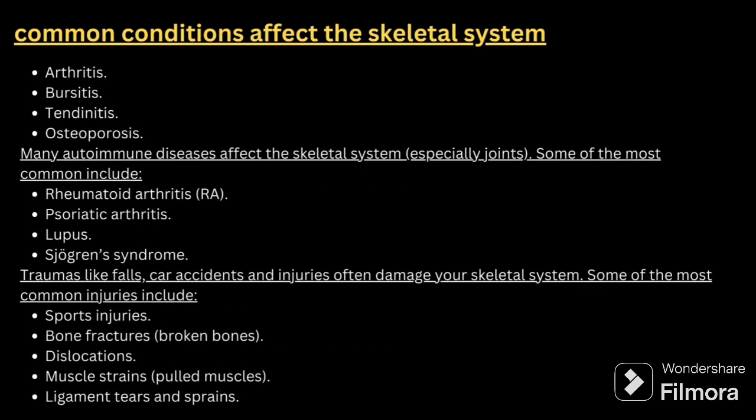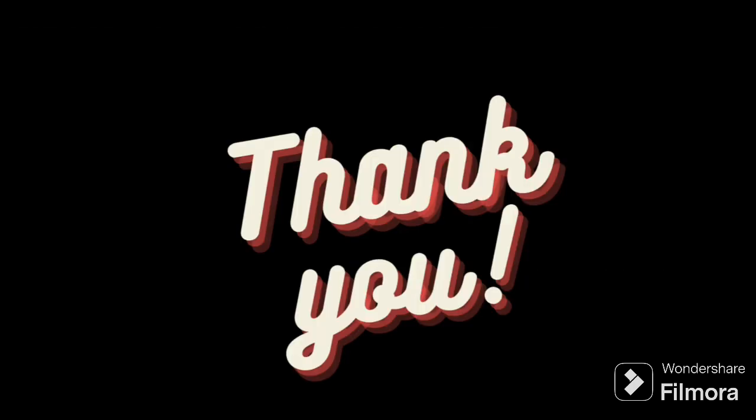Finally, the common conditions affecting the skeletal system are: arthritis, bursitis, tendonitis, and osteoporosis. Many autoimmune diseases affect the skeletal system, especially the joints — including rheumatoid arthritis, psoriatic arthritis, lupus, and Sjögren's syndrome. Trauma such as falls, car accidents, and injuries often damage the skeletal system; common injuries include sports injuries, bone fractures, dislocation, muscle strains, ligament tears, and sprains. That's all about the skeletal system. Thank you for watching — please subscribe, leave comments for any doubts, and watch the playlist. Best of luck for your interview!